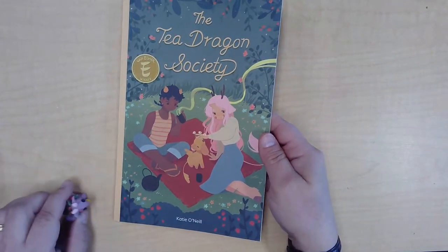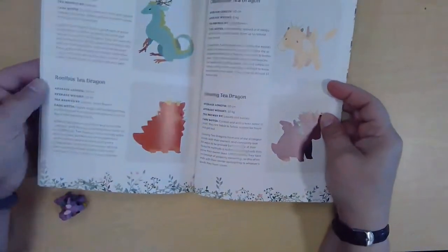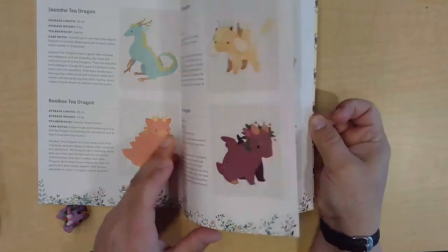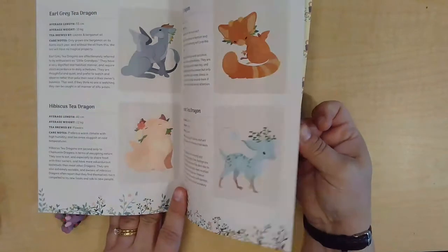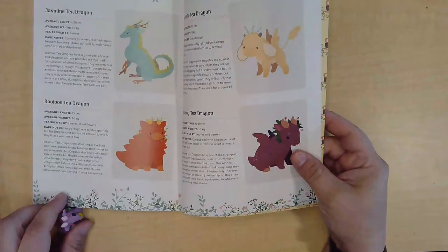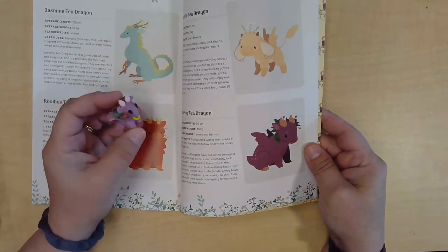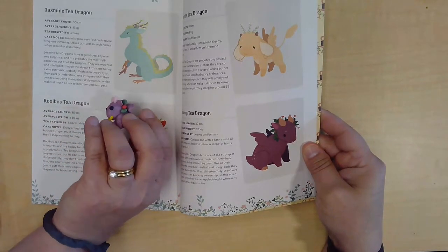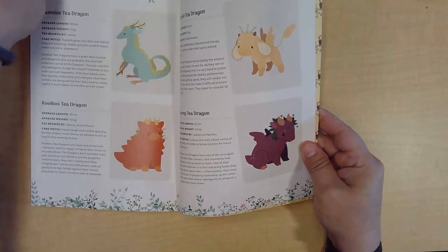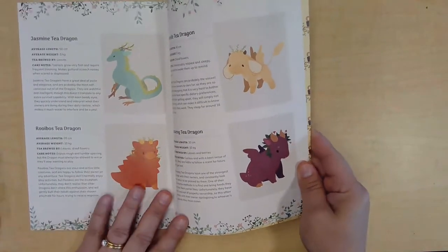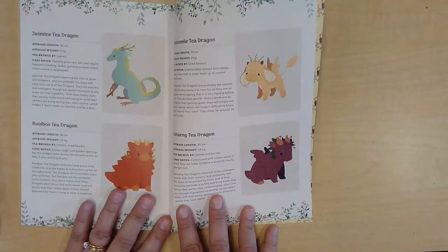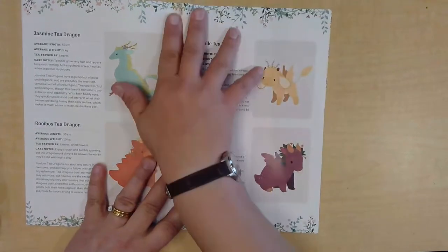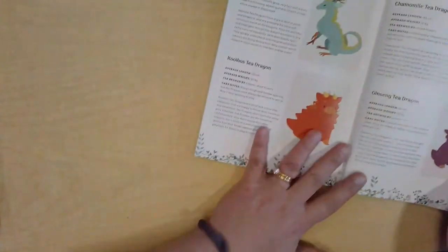Today, we're going to make a Sculpey Clay Tea Dragon, similar to the ones found at the back of your book. You can design your own, or you can use one of the ones in the guide at the back as an example. I did ginseng here as my first trial run, and you can see how that turned out. The color's not exact, but it's pretty close. So today, I'm going to try and do the Rui Boy as an example for you to follow along with.